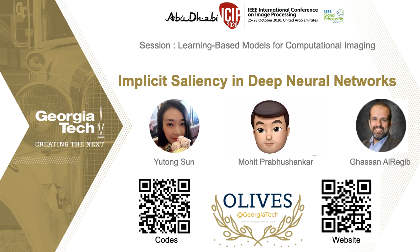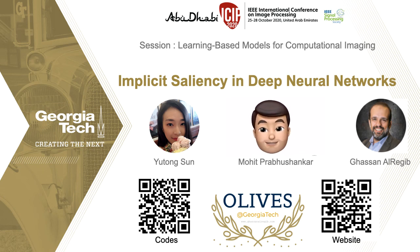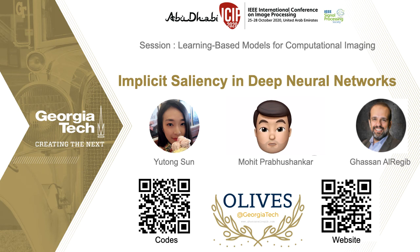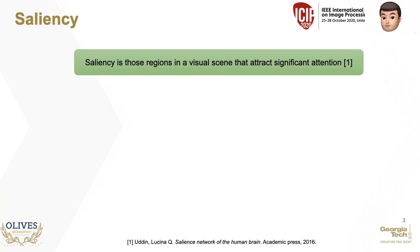In this paper, we show that deep neural networks trained for object classification or detection have implicit saliency embedded within them. We extract the saliency based on the well-studied expectancy mismatch hypothesis and we do so in a completely unsupervised fashion. Saliency refers to those regions in a visual scene that are most noticeable and attract significant visual attention from humans.